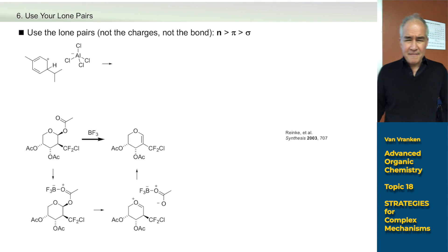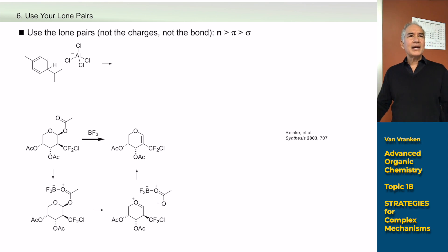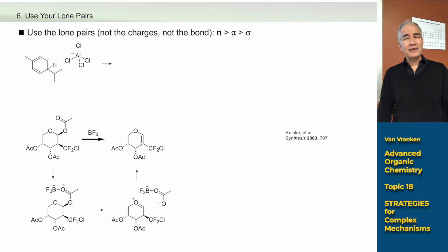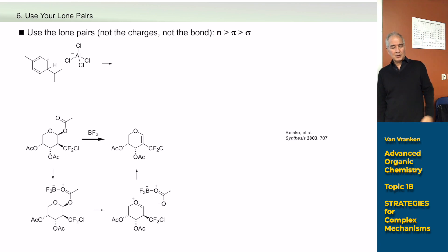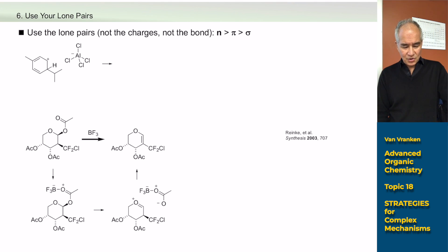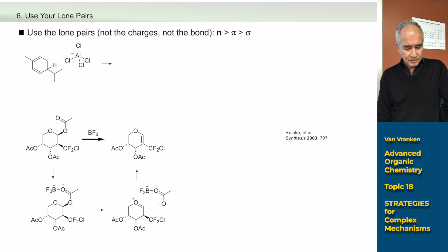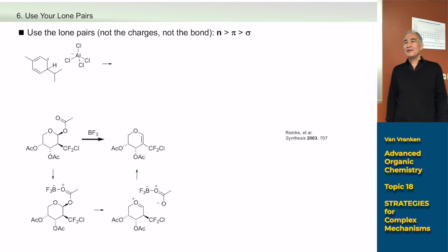Frontier molecular orbitals give you a powerful way of thinking about relative reactivities. Generally, lone pairs are more reactive than double bonds, and double bonds are more reactive than sigma bonds. You can change a sigma bond by making it a carbon-lithium bond, but if you just have carbon-carbon bonds versus lone pairs versus pi bonds, the lone pair should be the most reactive part. So you should try to start your first arrow with a lone pair if there's a lone pair in your reaction mixture — it's usually plausible.